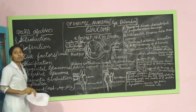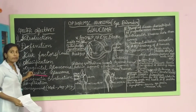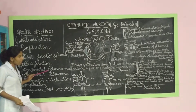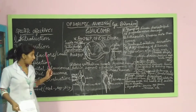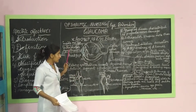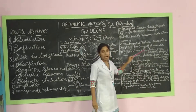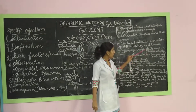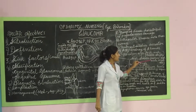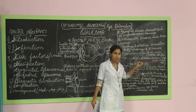Now we will see the classification of Glaucoma. First one is congenital Glaucoma and the second is acquired Glaucoma. Congenital Glaucoma is due to congenital defects. In acquired Glaucoma, there is primary Glaucoma and secondary Glaucoma. In primary Glaucoma, there is open angle Glaucoma and angle closure Glaucoma. Open angle Glaucoma is also called wide angle Glaucoma or chronic simple Glaucoma. Angle closure Glaucoma is also called narrow angle Glaucoma or acute congestive Glaucoma.